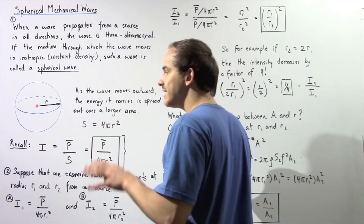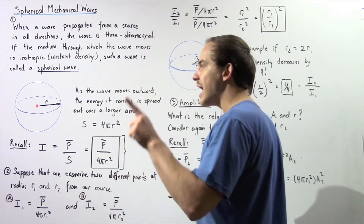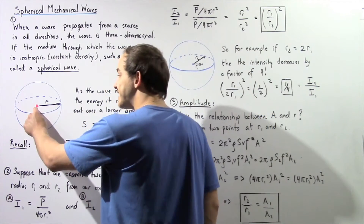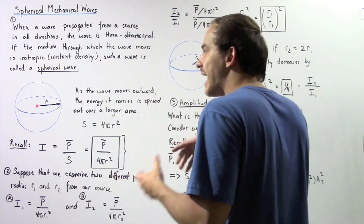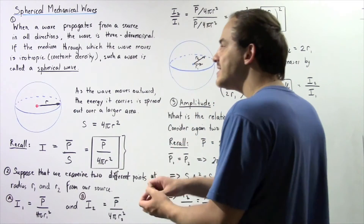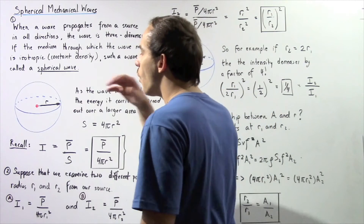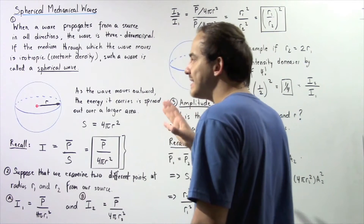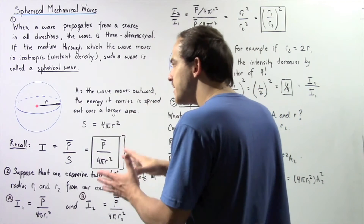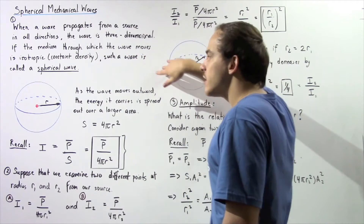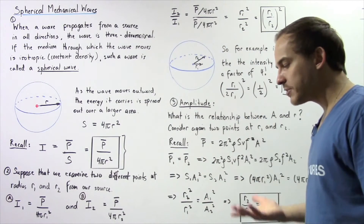When I snap my fingers at this red position given by the red dot, a sound wave is created and energy is transferred in the form of that sound wave. The sound wave propagates outward in all possible directions, and at any given moment, the shape that the sound wave creates is a sphere. As the wave moves outward, the energy it carries is spread out over a larger and larger area.